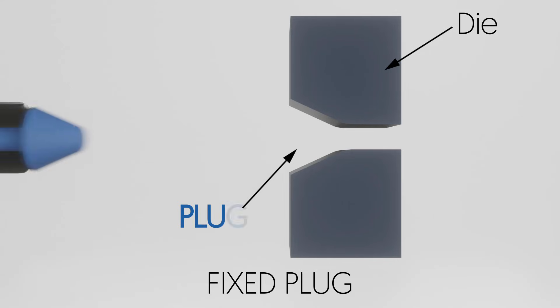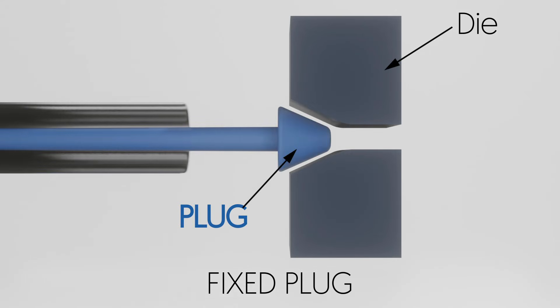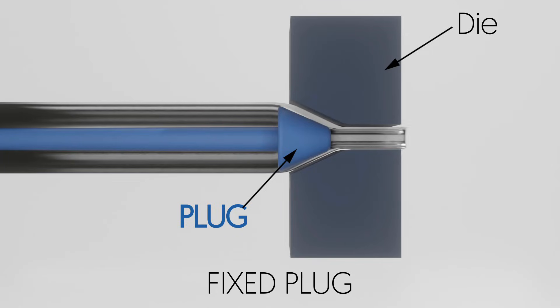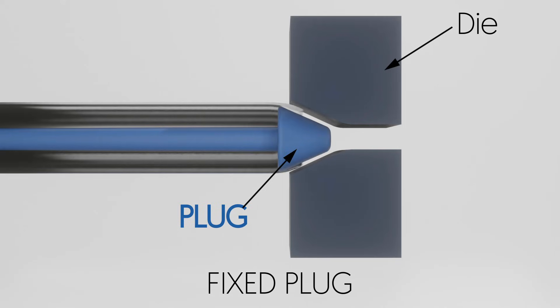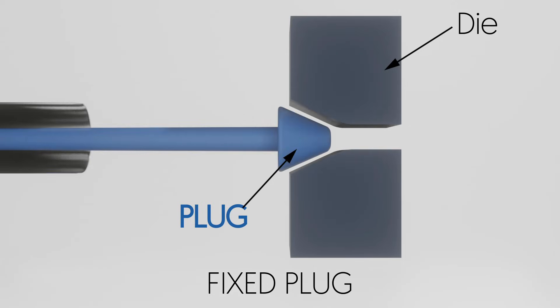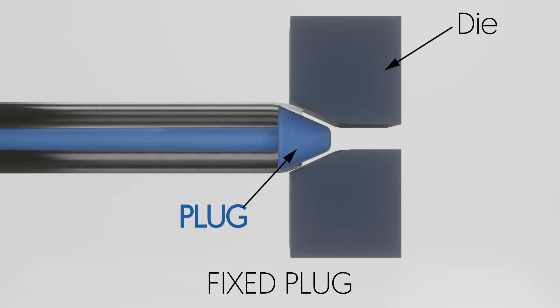Fixed plug: in this process, a mandrel is provided inside the tube. The mandrel or plug is fixed at its position. This provides a better surface finish on the inside diameter. This process has limited use because long tubes can't be drawn and area reductions are limited in this kind of process.